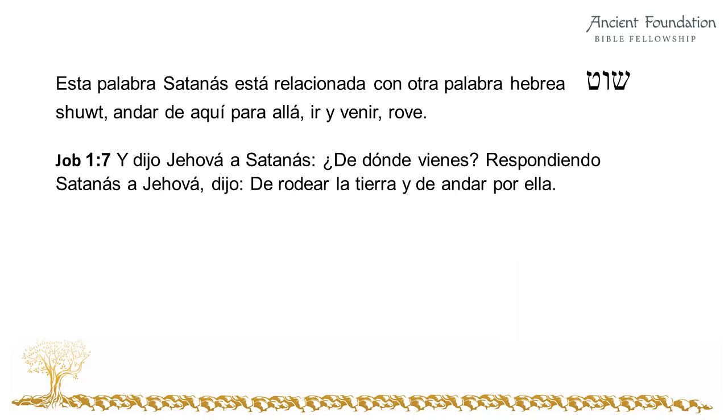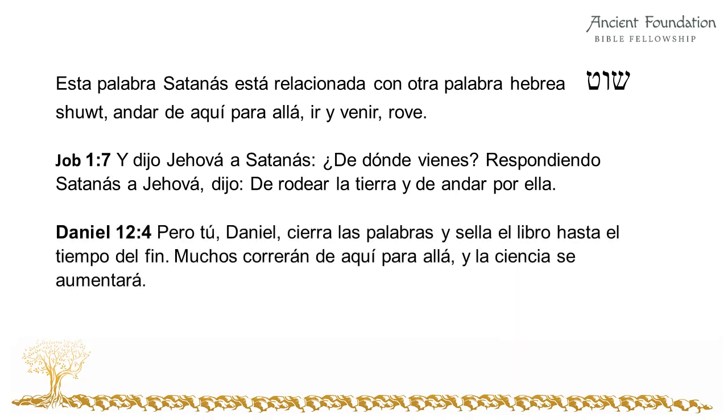Another example is in Daniel 12:4: But you, Daniel, shut up the words and seal the book until the time of the end. Many shall run to and fro, and knowledge shall increase. What is interesting is that just about every occurrence of this phrase 'to and fro' is connected to bad, evil, being unstable — pretty much Satan. It's just about every occurrence of this phrase, toing and froing.